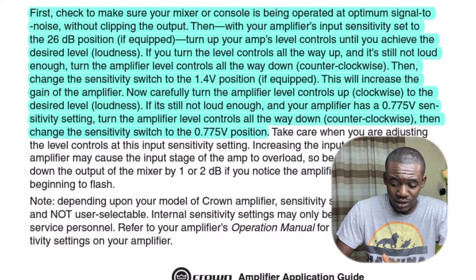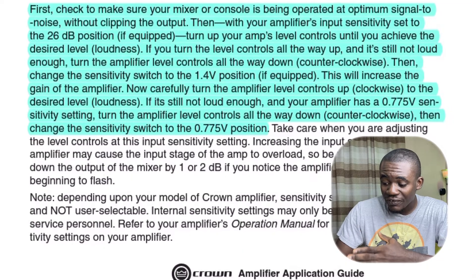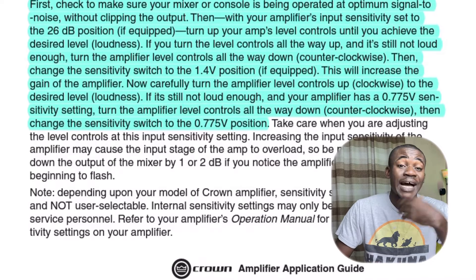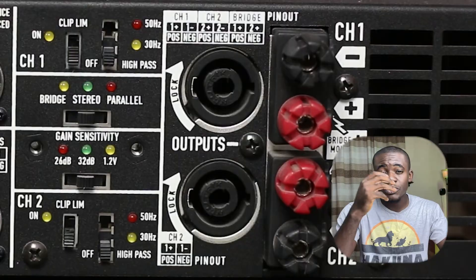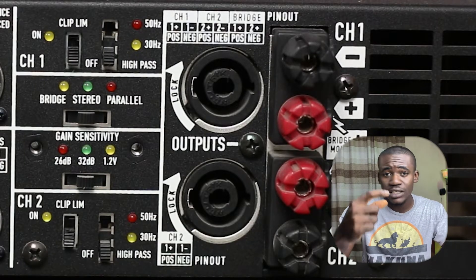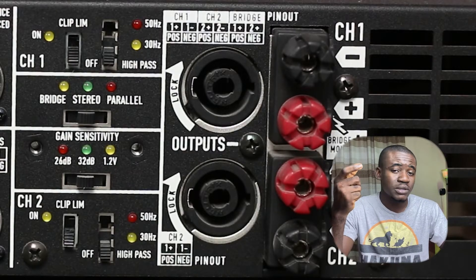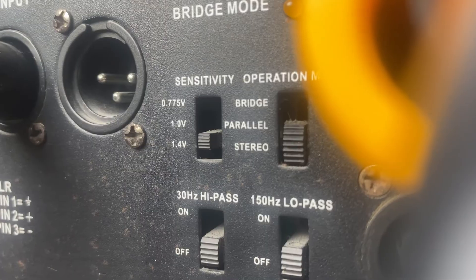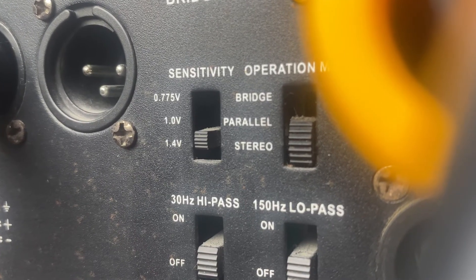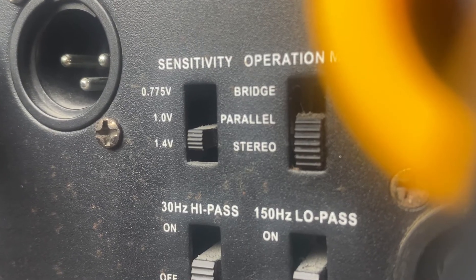Carefully turn the amplifier level controls up to the desired loudness. If it's still not loud enough and your amplifier has a 0.775 volt sensitivity setting or higher, repeat the entire process using higher sensitivity settings. For some power amplifiers, sensitivity settings might be in dB — such as 26, 30, or 32 dB — start at 26 dB and increase to 32 dB if necessary. For other amplifiers, it's in volts: 1.4 volts, 1 volt, and 0.775 volts — start at 1.4 and gradually move down to 0.775 volts. A word of caution: take care when increasing the amplifier level controls at very high input sensitivity settings, as you might cause your inputs to overload.